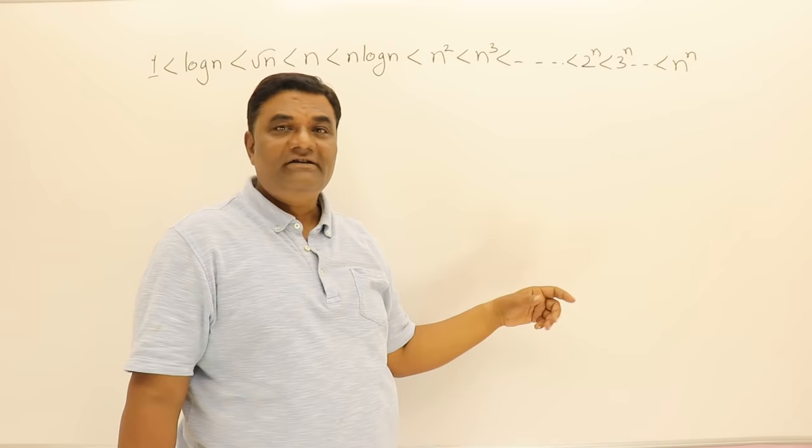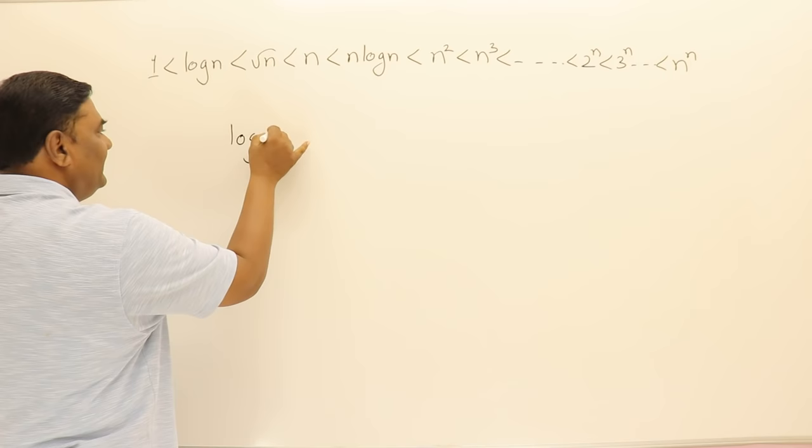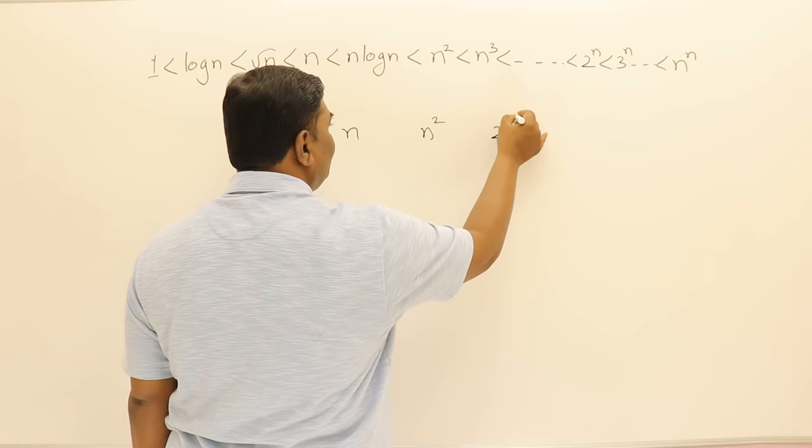Now to prove that I will take few terms from this, few type classes. Let us say log n, n, n square, 2 power n. Let us try this.